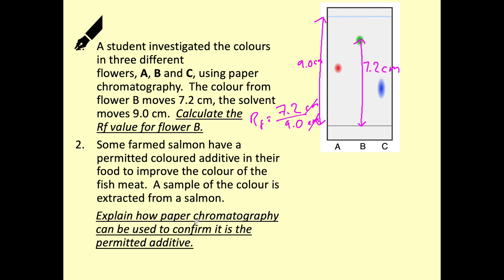Number two is looking at how we can use paper chromatography to confirm whether something is permitted additive. So with our allowed additives, this is a known substance and so we would have stored our RF values in a database. So explain how we can use that in order to confirm that it is the permitted substance. Pause the video whilst you have a go at those.